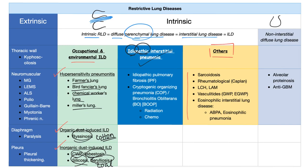The idiopathic group, meaning unknown etiology, includes first idiopathic pulmonary fibrosis, and second, the combination of cryptogenic organizing pneumonia and bronchiolitis obliterans — together called BOOP: bronchiolitis obliterans organizing pneumonia, which can be related to radiation or chemotherapy. Other miscellaneous causes include sarcoidosis, rheumatological problems such as rheumatoid arthritis especially Kaplan syndrome, systemic sclerosis, Langerhans cell histiocytosis, and LAM — lymphangioleiomyomatosis.